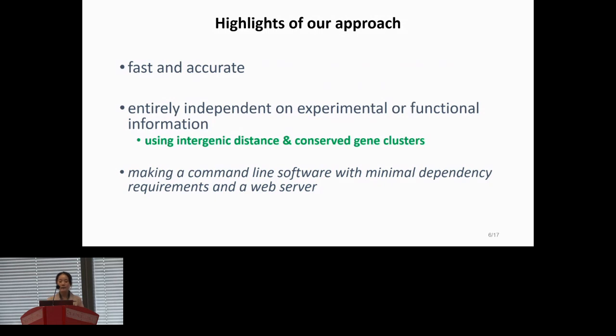This method is only based on two types of data sources: intergenic distance and conserved gene clusters, which can be derived from the sequences only. So, our method is entirely independent of experimental or functional information enabling its application to any prokaryotic genomic or metagenomic data. And we are also working on making a command line software with minimal dependency requirements and a web server to make it easier to use.